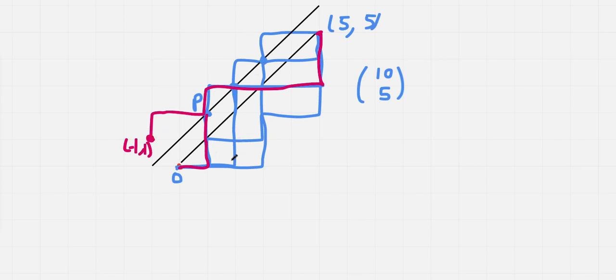So perhaps there's a bijection here. Every bad path, if we reflect it, we get this path. We say that we have a bijection between bad paths and the grid walks from negative 1 comma 1 to 5 comma 5. I won't go through all the details of the bijection, but I encourage you to think about why any bad path must have a corresponding path, and why any of these grid walks must have a corresponding bad path.